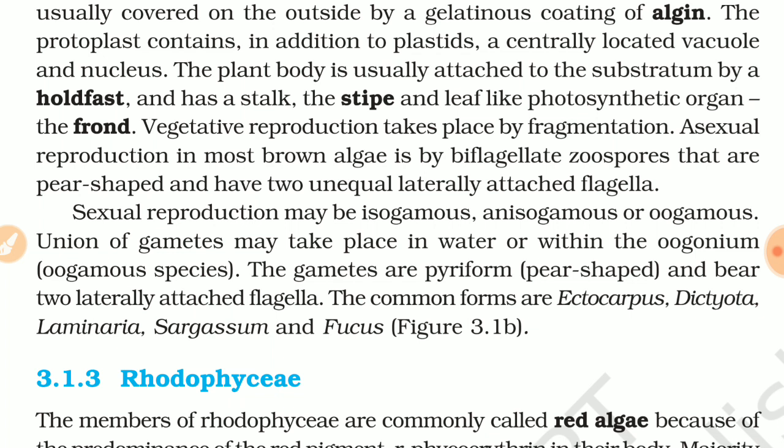Sexual reproduction may be isogamous, anisogamous, or oogamous. Union of gametes may take place in water or within the oogonium. The gametes are pyriform and bear two laterally attached flagella.